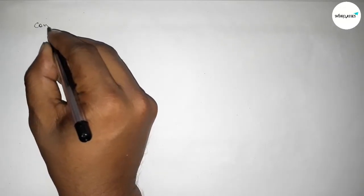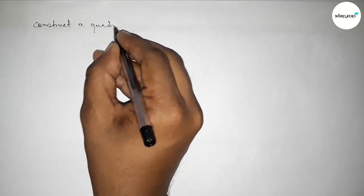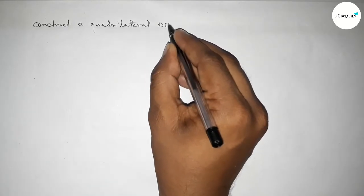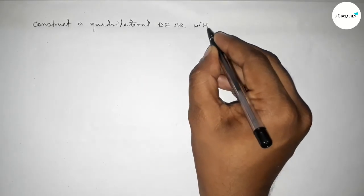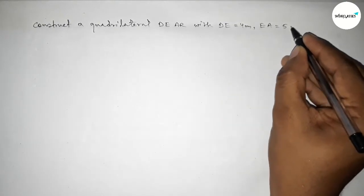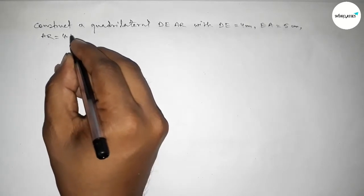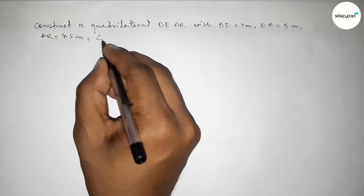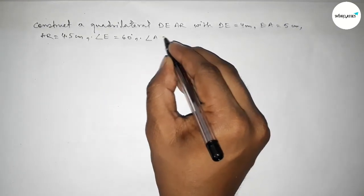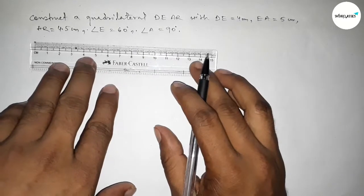Hi everyone, welcome to the size share class. Today in this video we have to construct a quadrilateral DEAR with given sides: DE equal to 4 centimeter, EA equal to 5 centimeter, AR equal to 4.5 centimeter, angle E equal to 60 degree, and angle A equal to 90 degree. So let's start the video.